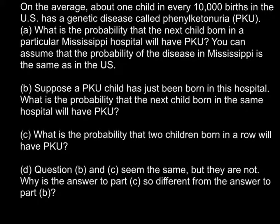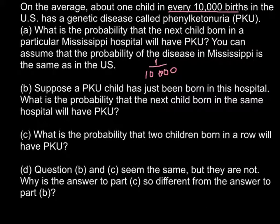So when you are ready, you can run the video again and compare your answer with my answer and explanation. Here is the first question. On the average, about one child in every 10,000 births in the United States has a genetic disease called phenylketonuria. What is the probability that the next child born in a particular Mississippi hospital will have PKU? You can assume that the probability of the disease in Mississippi is the same as in the United States. The probability that the next child would have this genetic disorder would be 1 out of 10,000.